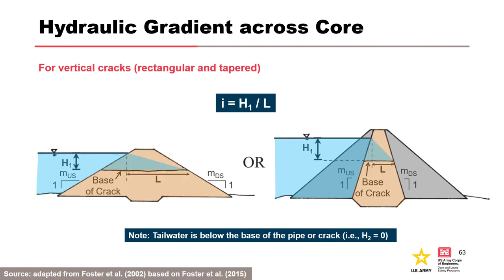For the case of tailwater below the base of a vertical crack, an equivalent length must be estimated. For a homogeneous embankment, the hydraulic head loss occurs over length L along the base of the crack measured from the downstream face to a projection of the point where the water level intersects the upstream face. For a zoned embankment where outer zones are very permeable, the head loss occurs over length L along the base of the crack measured from the downstream face of the core to a projection of the intersection of the water level with the upstream face of the core.